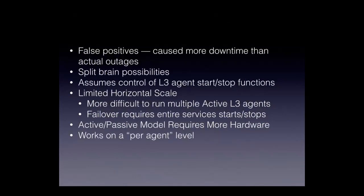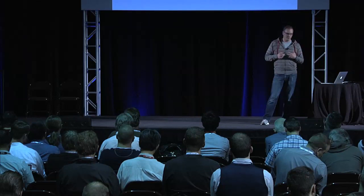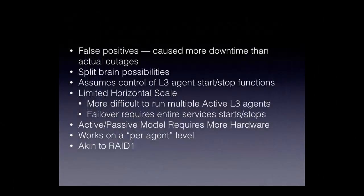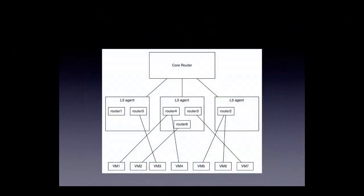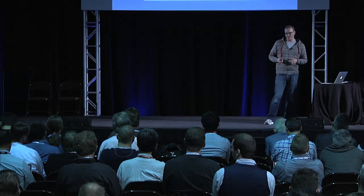Pacemaker works on a per-agent level — it doesn't really know about individual routers on the agent, so you don't get fine-grained granularity. Analogous to RAID 1, you have to have two pieces of hardware, so if you've got three L3 agent nodes you really have six. When you lose an L3 agent, Pacemaker just fires up another one or moves those routers to it, so your layout ends up looking exactly the same.